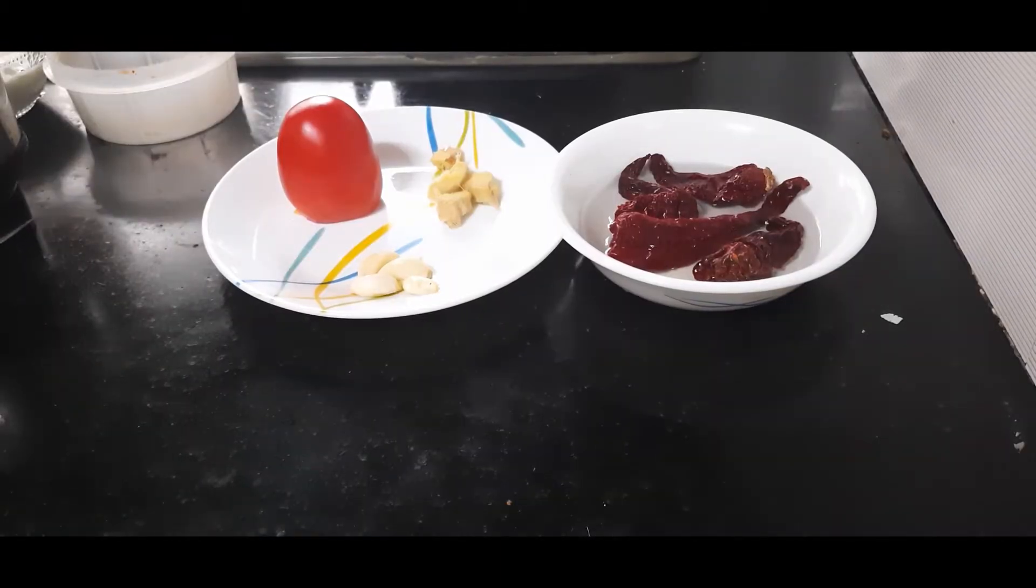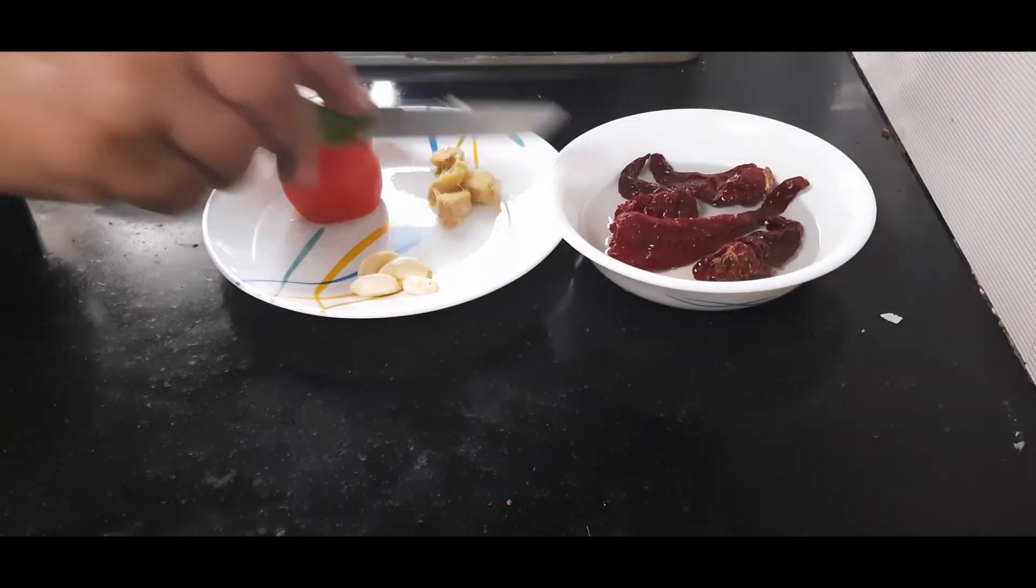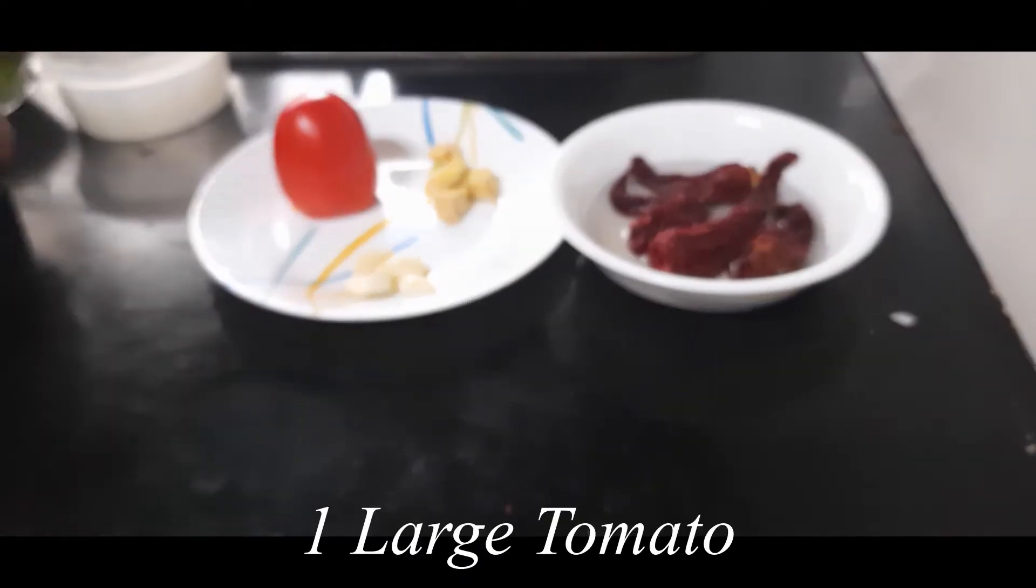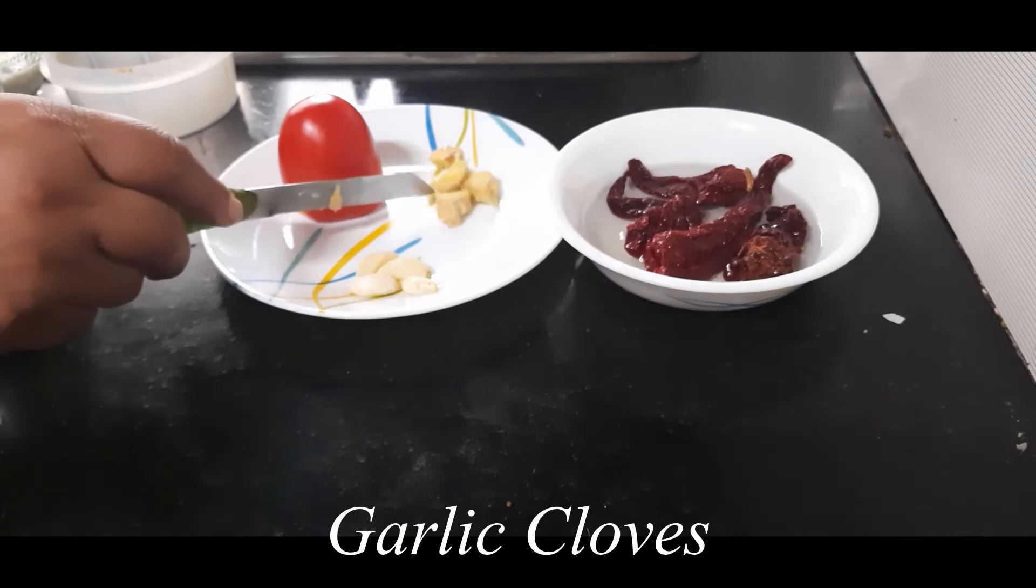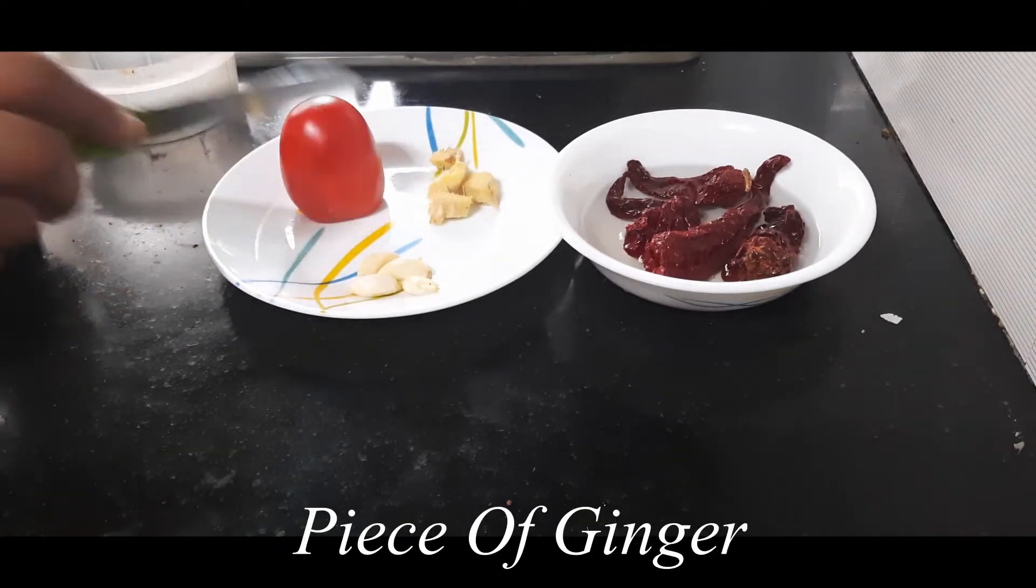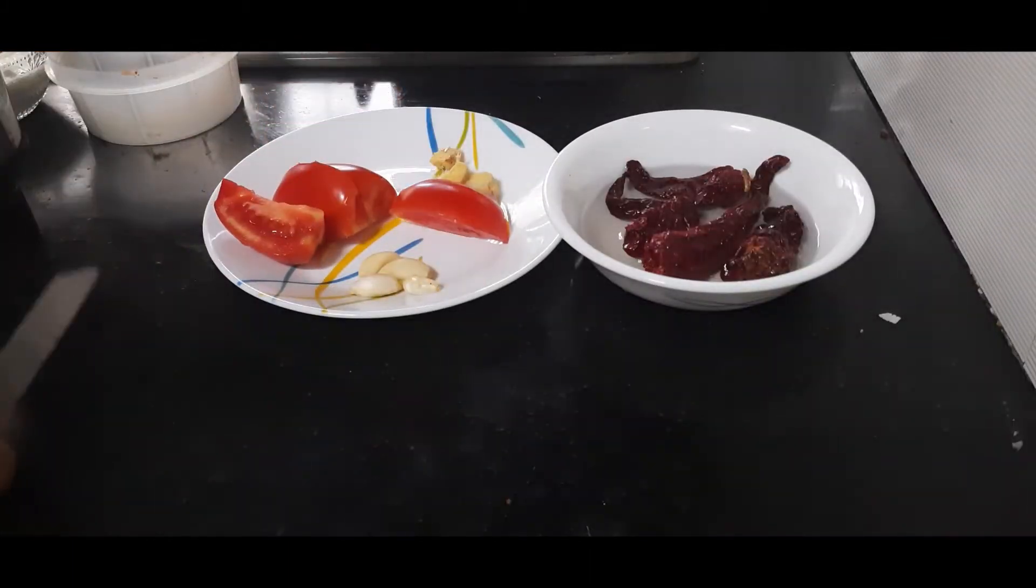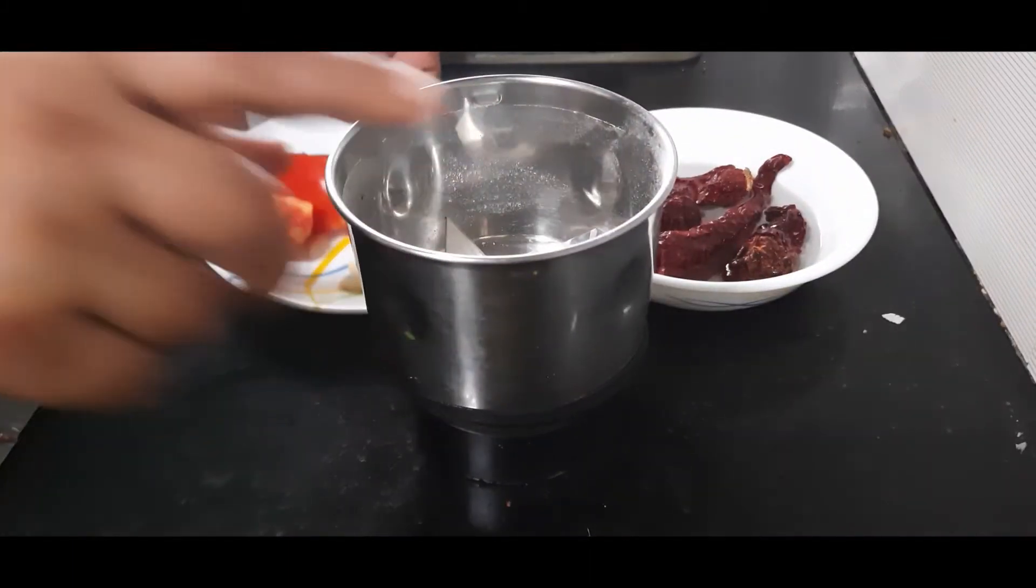While the batter is getting ready, let us prepare a tangy chutney for the idlis. I have soaked a few whole red chilies, about four or five, one large tomato, few garlic cloves, and a piece of ginger which is roughly chopped. I'll first chop the tomato.